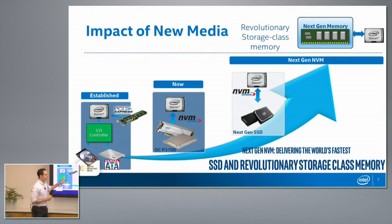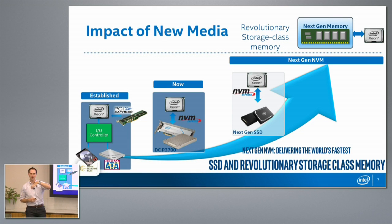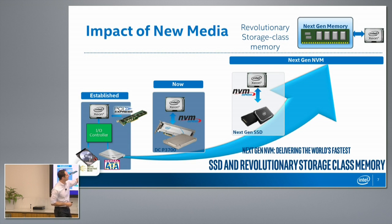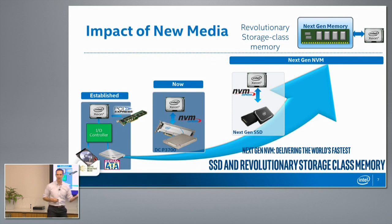Here is where the media landscape has been and is going. At one point, everything was a spinning disk connected by some external controller. That's given way to NVMe, where you get rid of that external controller and connect directly to the PCI bus. As Intel and industry roadmaps progress, that investment in moving to NVMe starts to pay huge dividends. It culminates, at least for Intel, with taking next-generation 3D XPoint media and sticking it right in a DIMM slot — as close as you can to the CPU — with storage class memory as the end goal.